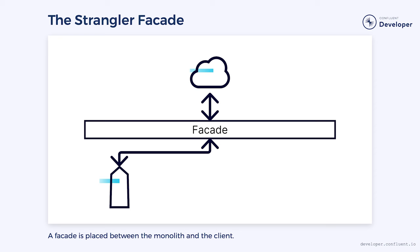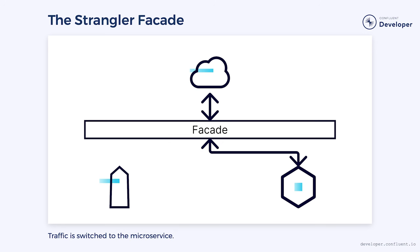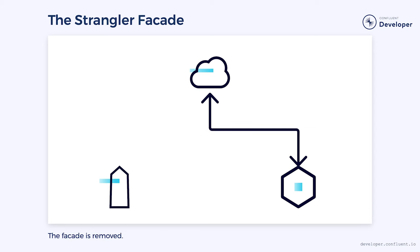Typically, this is done by inserting a facade in front of the system we're trying to replace. We move everything to communicate with the facade. Then we begin to re-implement features a few at a time using a new architecture. When we're ready for production, we switch the facade to point at the new system rather than the old, but only for a few features. We can then either delete the facade or leave it in place to act as an API gateway for the new service. When we're done, we repeat the process with another set of features.